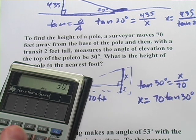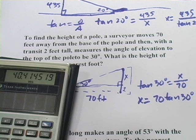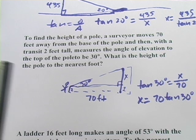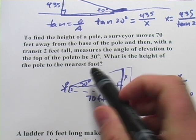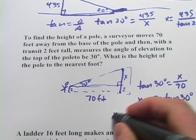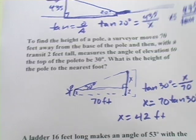So 30 tangent times 70, and we get 40.4 feet, but we want to add 2 to that to get the whole height of the pole. And we want the nearest foot, so the answer is going to be 42 feet. Let's try one more.